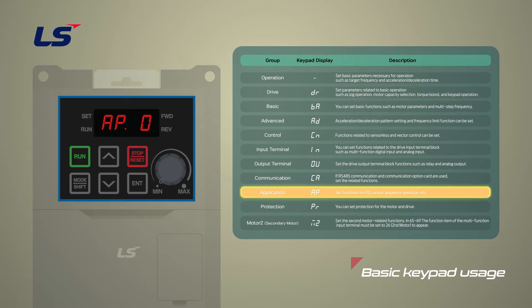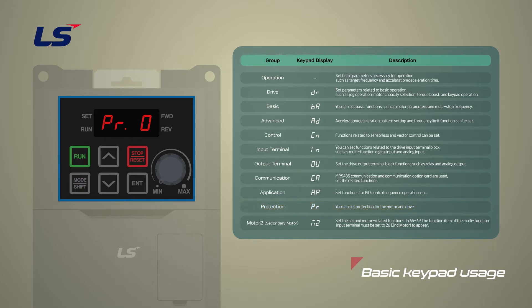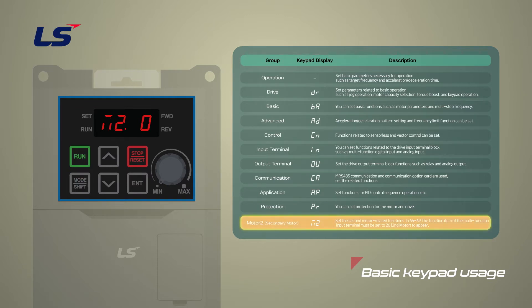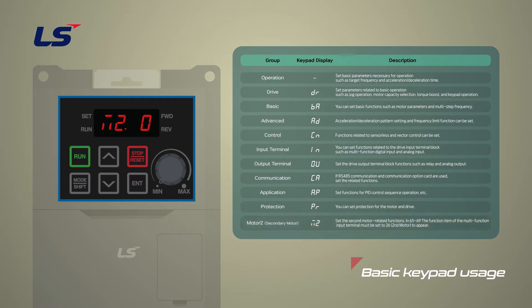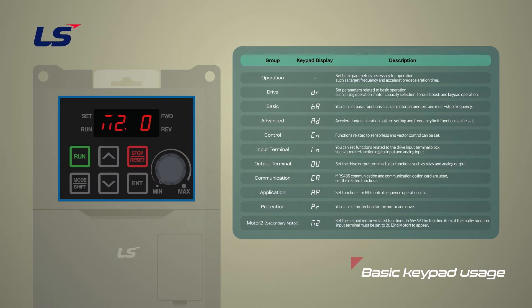The communication function group that configures communication features for RS-485 or other communication options. The application function group that configures functions related to PID control. The protection function group that configures motor and inverter protection features. And lastly, you will find the secondary motor function group. For reference, the secondary motor group appears on the keypad only when one of the multifunction input terminals has been set to 26. You can move to the first DR drive group by pressing the mode shift key once more in the last sequence group.